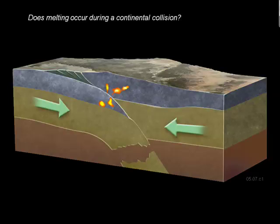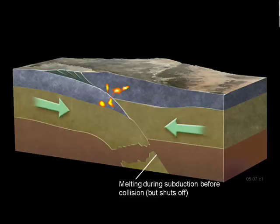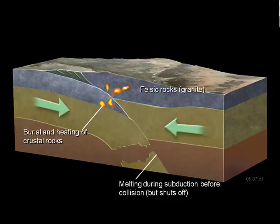How about at a continent collision? Do you have much melting? Not much. I mean, you used to have melting during the subduction before the collision, but that's all done and over with. Whatever melting you might have because of burial will probably just turn into felsic rocks like granite, cool underground, and never make it to the surface. So that's why you don't tend to have any volcanoes associated with a continent-to-continent convergence.